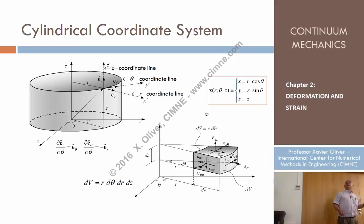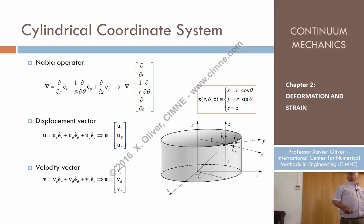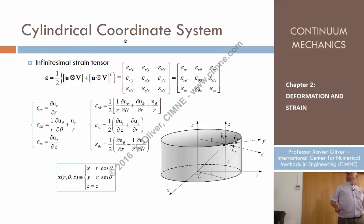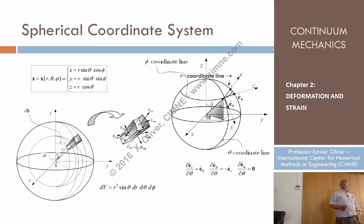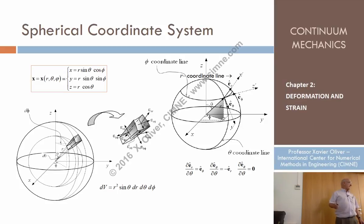Now that you know the cylindrical coordinate system, consider another orthogonal curvilinear coordinate system: the spherical coordinate system. A spherical coordinate system identifies a point by three numbers: the radius — the distance to the origin; theta, the zenith angle, which increases clockwise from the z-axis downward; and the azimuthal angle phi. If you know all three values, you can find x, y, and z using the corresponding transformation relationships.